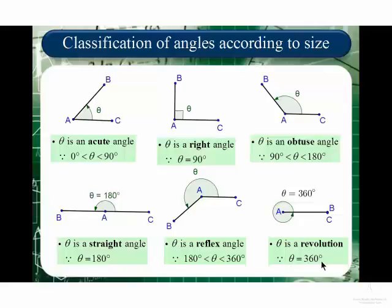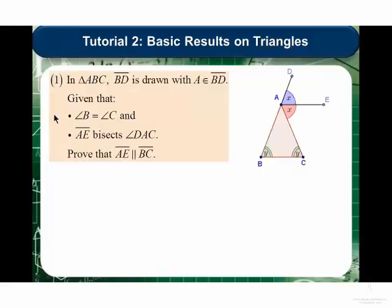I think you should be ready now to tackle a tutorial which deals with the basic results on triangles. Let's have a look at problem 1 of this tutorial. We're given a triangle ABC, and the side AB is extended to the point D, as indicated. So BA is extended to D.